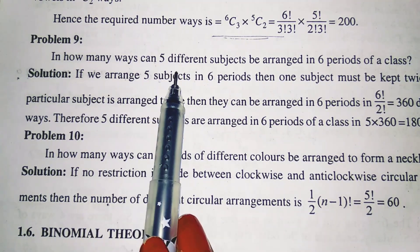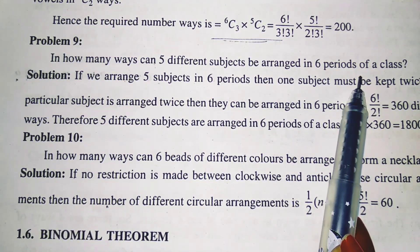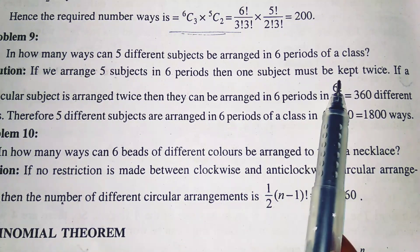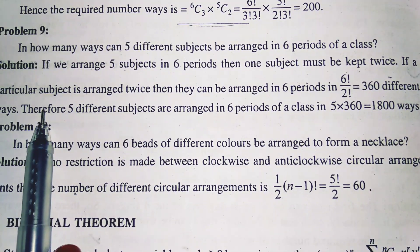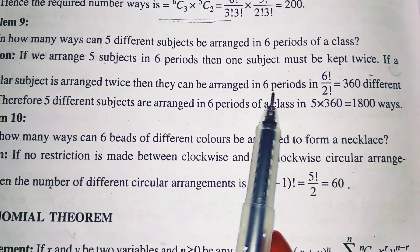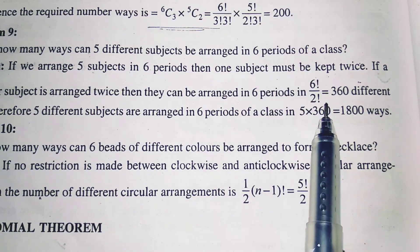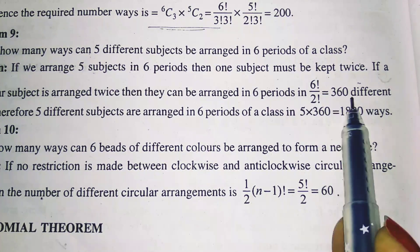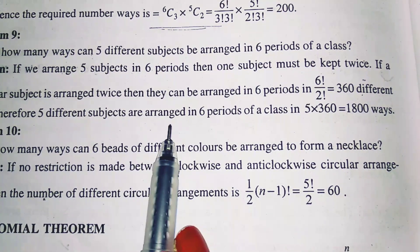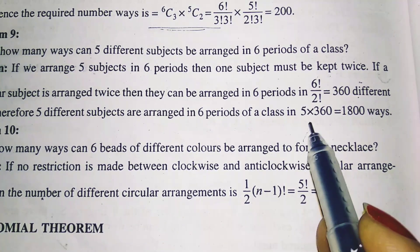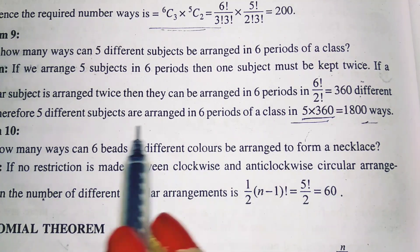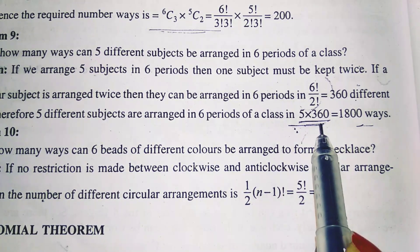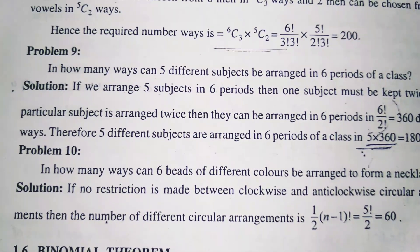In how many ways can five different subjects be arranged in six periods of a class? If we arrange five subjects in six periods, one subject must be repeated twice. If a particular subject is arranged twice, they can be arranged in six periods in 6!/2! ways, since there are six periods and one subject is repeated twice. Since five different subjects can each be the repeated one, the total number of arrangements is 5 × 6!/2!.